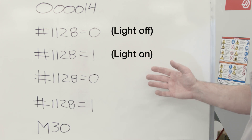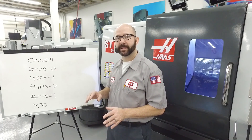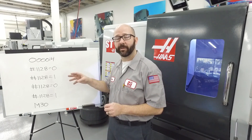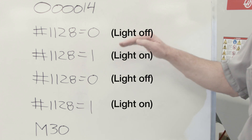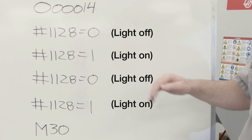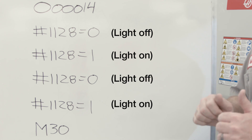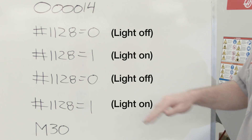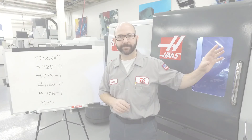Now in single block mode, I expect that light to turn off and on each time the green cycle start button is pressed as we walk through the program line by line. Let's go to the control and see if it does what I intended.